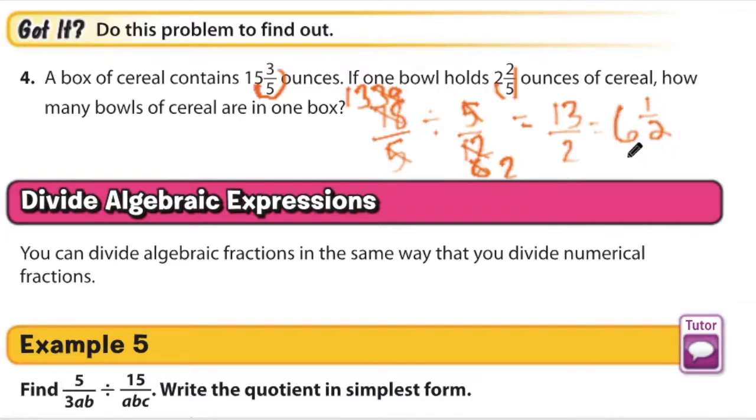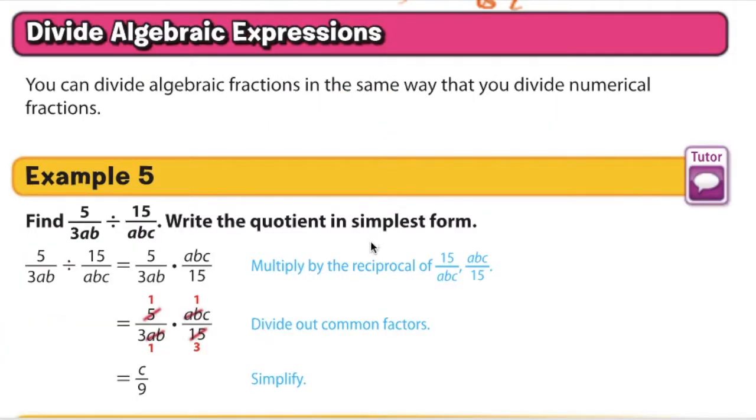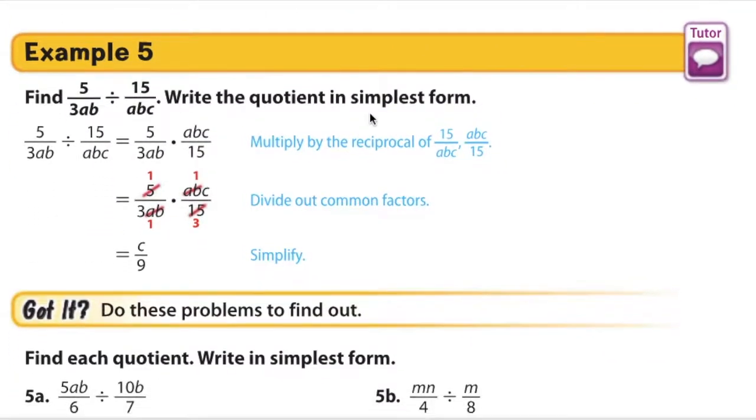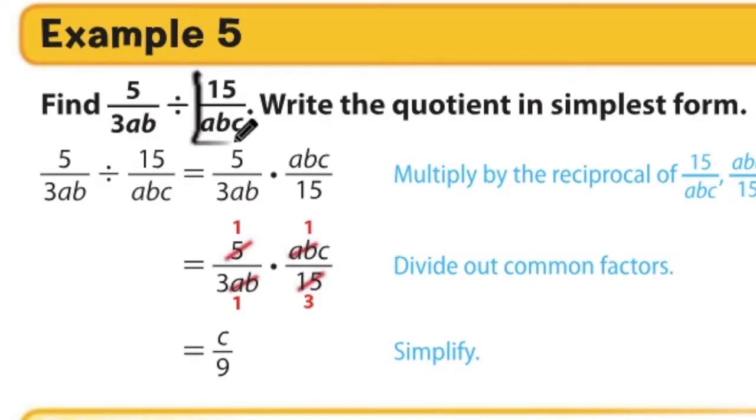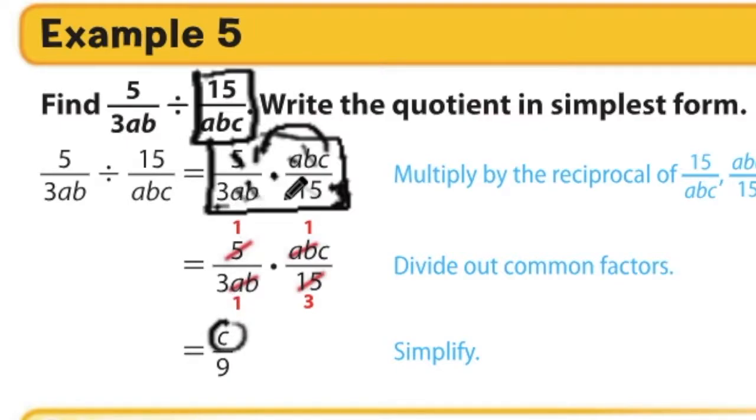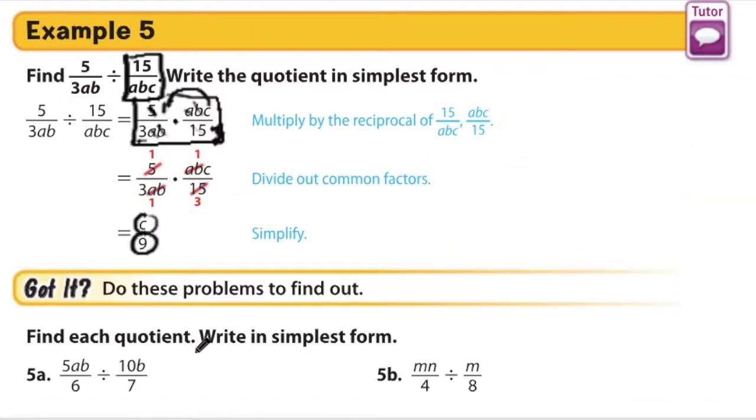For example 5, you're going to be dividing algebraic expressions, so we'll add a level of difficulty into this process by putting in some variables. Don't let that scare you. As long as you understand the multiplicative inverse or reciprocal, you should be okay. So we have a division problem right here, and we're going to do the reciprocal of the second fraction and change to multiplication. Because there are no addition or subtraction signs involved here, we can cancel as much as we want. We have an A and a B here that we can cross-cancel with the A and the B in the numerator of the second fraction. We also have a 5 that can be reduced here with a 15. And then notice what we have left in the numerator is a 1 and a C. That's where the C came from. In the denominator, we have a 3 and a 3, which is where the 9 came from. Let's take a look at the got-it problems to make sure you understand.